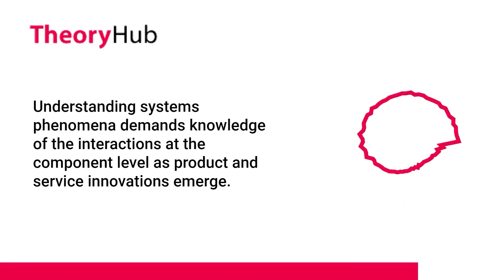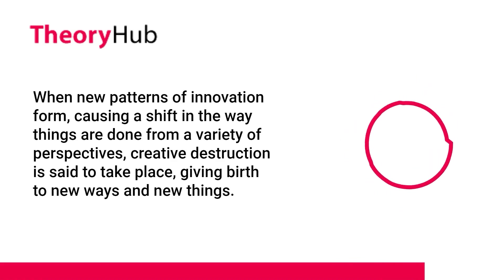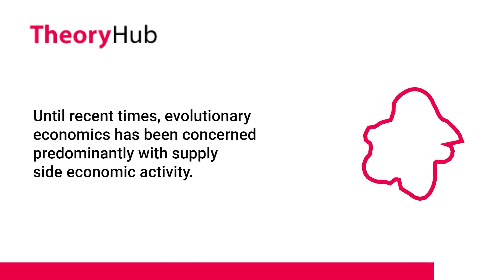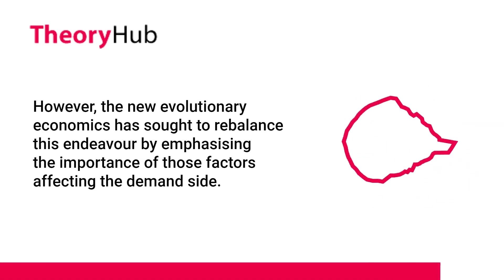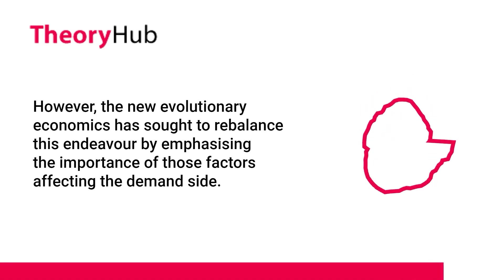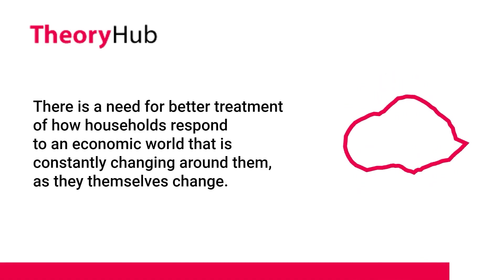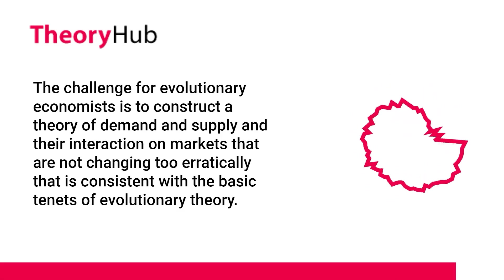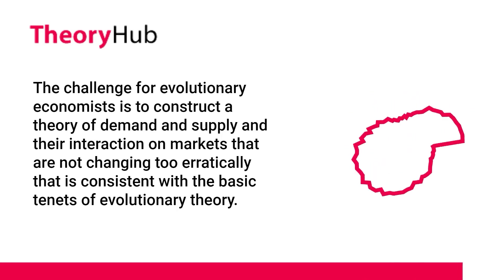Understanding systems phenomena demands knowledge of the interactions at the component level as product and service innovations emerge. When new patterns of innovation form, causing a shift in the way things are done from a variety of perspectives, creative destruction is said to take place, giving birth to new ways and new things. Until recent times, evolutionary economics has been concerned predominantly with supply-side economic activity. However, the new evolutionary economics has sought to rebalance this endeavor by emphasizing the importance of factors affecting the demand side. There is a need for better treatment of how households respond to an economic world that is constantly changing around them, as they themselves change. The challenge for evolutionary economists is to construct a theory of demand and supply and their interaction on markets that is consistent with the basic tenets of evolutionary theory.